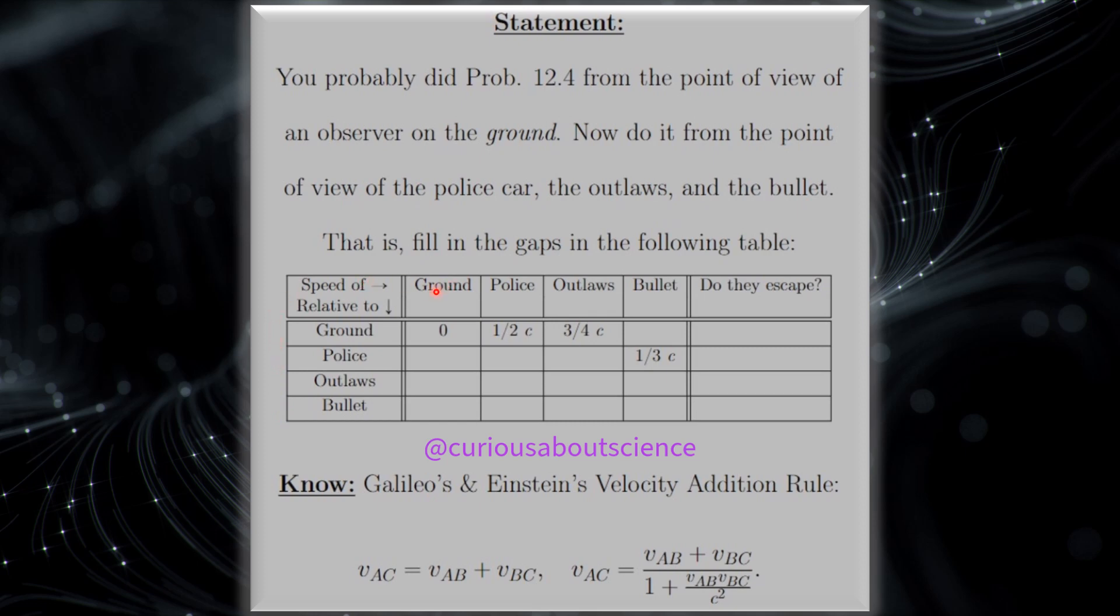How to read this is, what is the speed of the ground relative to the ground? Well, that should be zero. Makes sense? So now we have to fill in everything else.